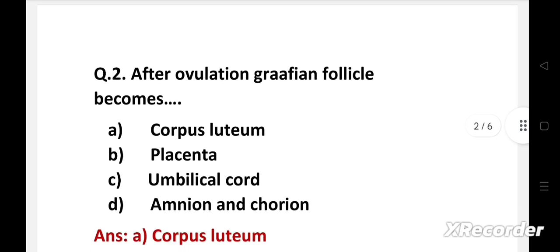Right answer is option A: corpus luteum. During ovulatory phase, luteinizing hormone induces rupturing of graafian follicle. And during secretory phase, empty graafian follicle changes into corpus luteum.